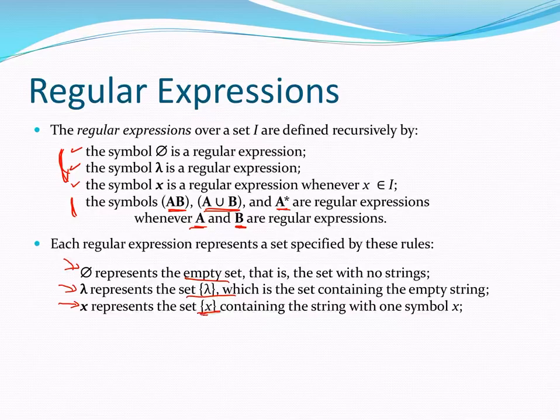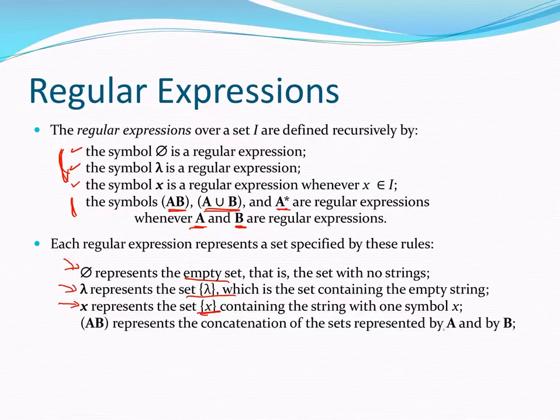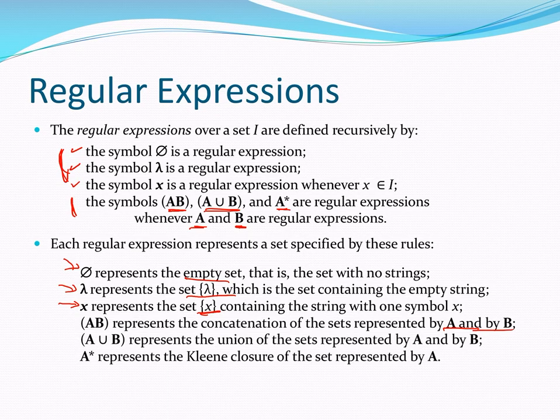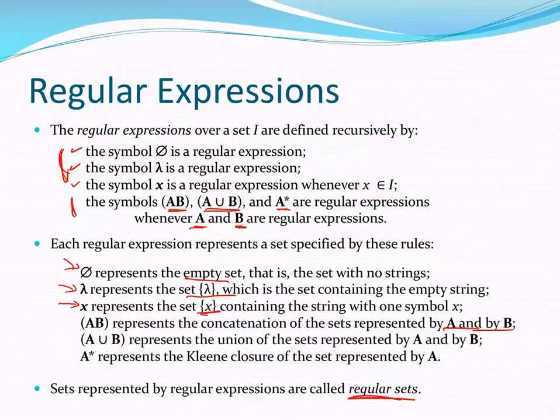The concatenations, unions, and Kleene closures represent those sets created by those operations. It's just another way to write down a set — we've seen other ways using roster notation and set brackets. This is the regular expression method for writing down these types of sets, and as we'll see, they're useful in proofs. If we can represent a set using these symbols, it is called a regular set.